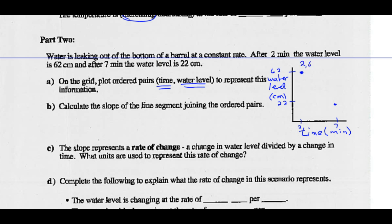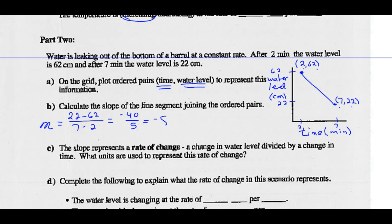So this is the point (2, 62) and this is the point (7, 22). Part B: Calculate the slope of the line segment joining these ordered pairs. Slope = (y2 - y1) / (x2 - x1) = (22 - 62) / (7 - 2) = -40 / 5 = -8.